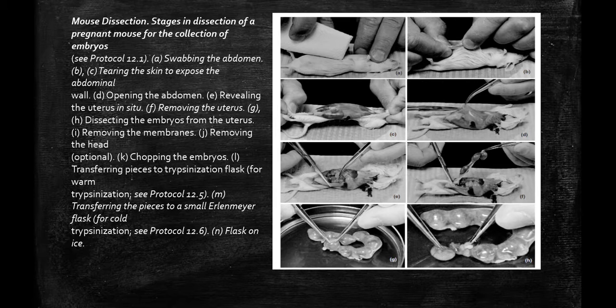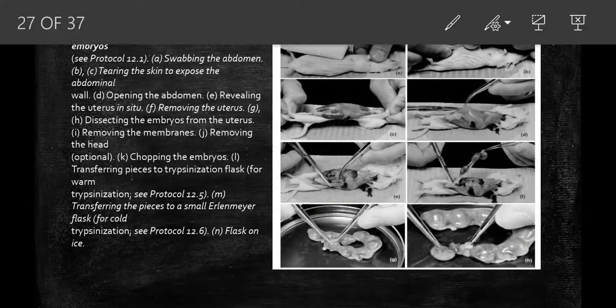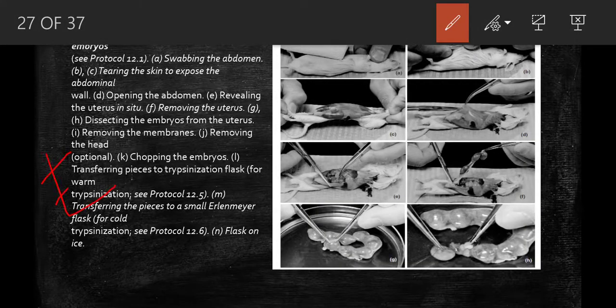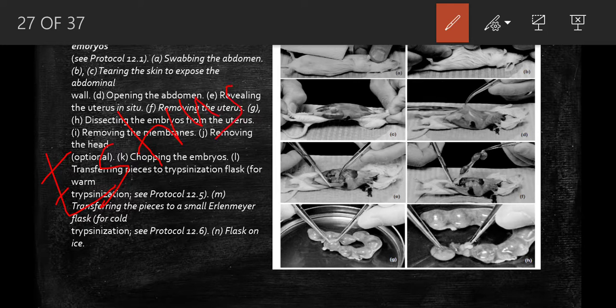The first step is called induction of estrus. Estrus is a period in the sexual cycle of a female mammal, always seen in lower primates but not in higher mammals. It's the period of heat when the female is ready to accept the male to mate.